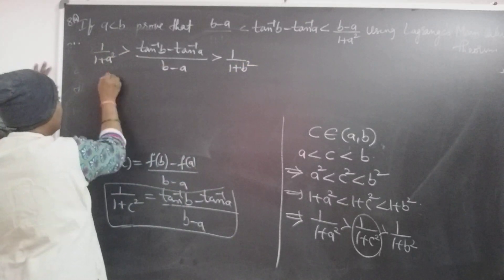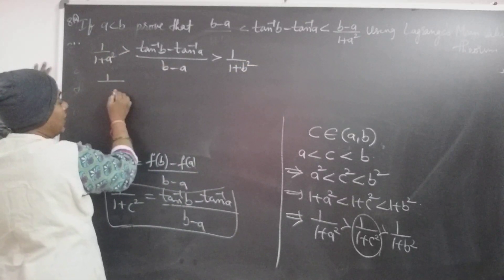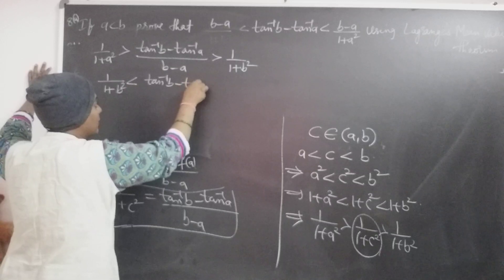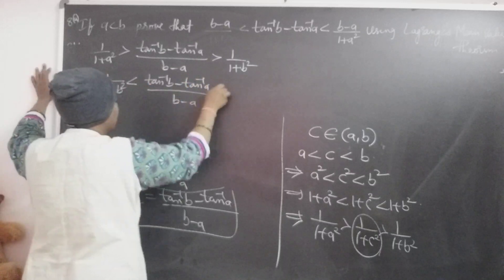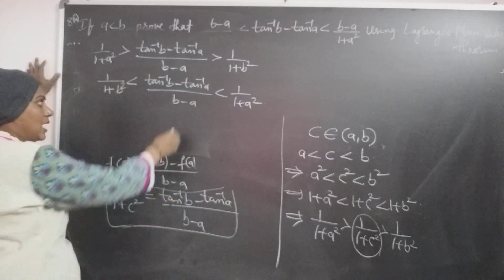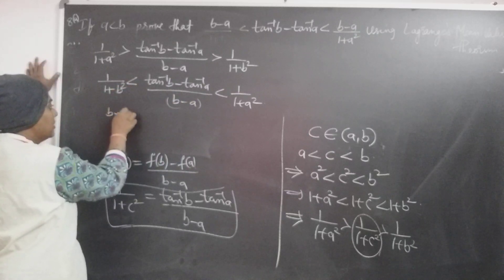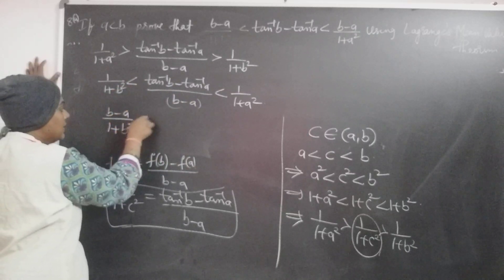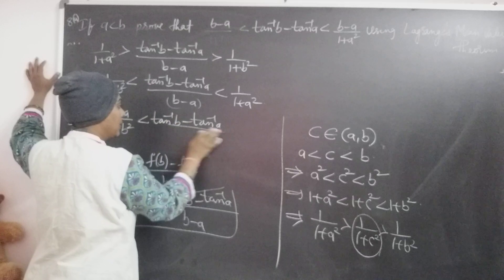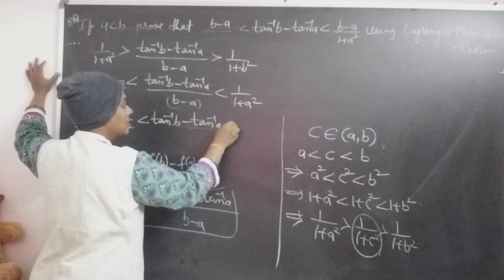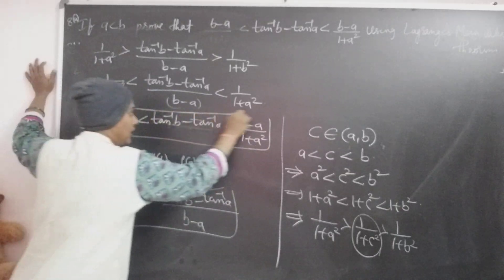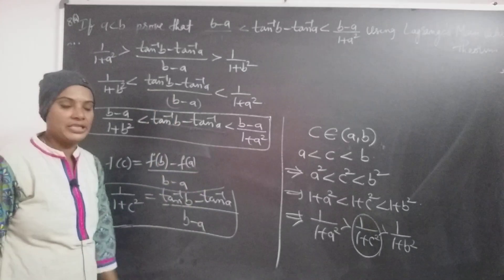By cross multiplication, this gives 1 by 1 plus B squared is less than 1 by 1 plus A squared. Multiplying through by B minus A: B minus A by 1 plus B squared is less than tan inverse B minus tan inverse A, which is less than B minus A by 1 plus A squared. This is the relation we had to show by using Lagrange's mean value theorem.